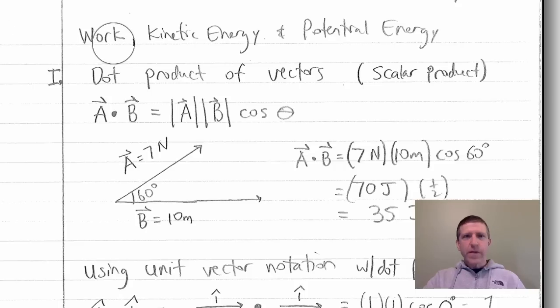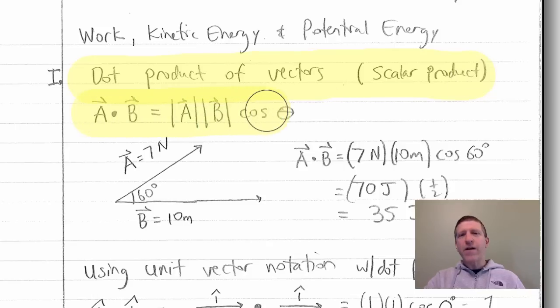Let's go ahead and get into it right here. We're today talking about work, kinetic energy, and potential energy. And so, for starters, I've got to introduce you to a little bit of math here, and that's called the dot product of vectors. Also called the scalar product. And when we symbolize this, we use a dot. You may say, oh, he's just multiplying there. This dot is more than just multiplication. It means something very specific.